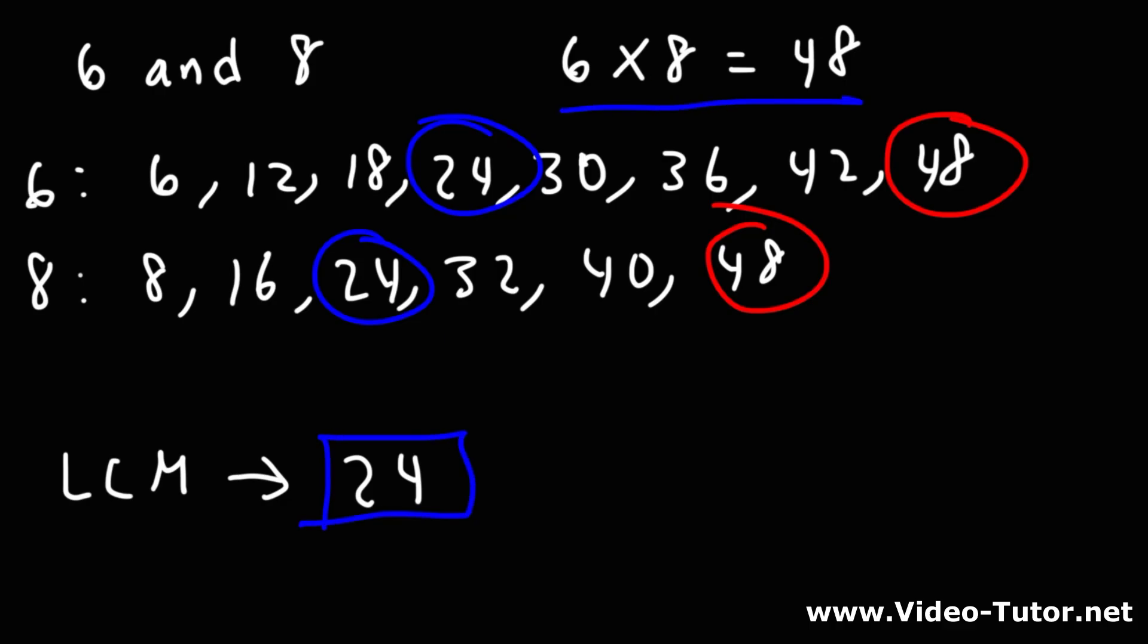So even though sometimes you may multiply the two numbers, it will give you a common multiple, but that common multiple won't always be the least common multiple.